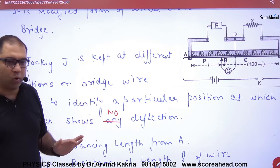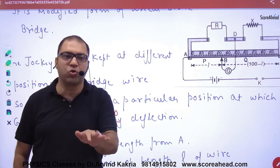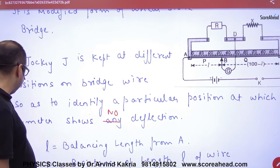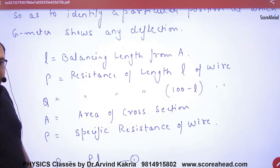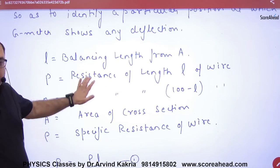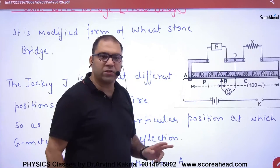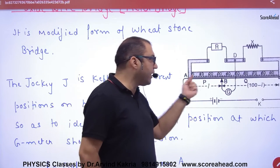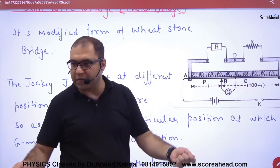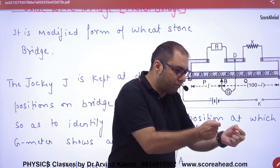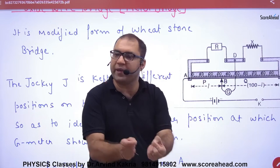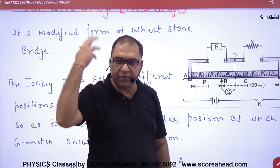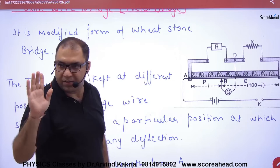We hold the jockey at a point where the galvanometer shows no deflection. When the galvanometer reading is zero, we put a scale on the wire — 100 cm — and measure the length in the lab. When the bridge is balanced, we call this the balancing length L.